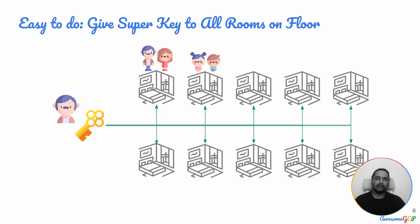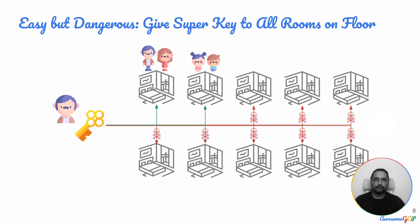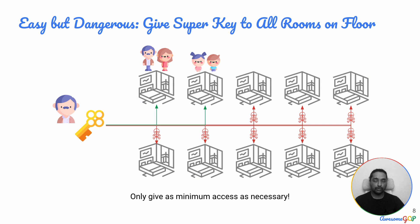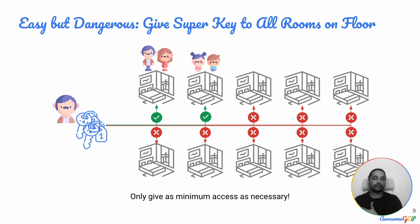Is this a reasonable thing to do? Obviously not. It would be dangerous to give universal access to the entire floor to one person because they could misuse it — maliciously or otherwise, even accidentally walk into a room they should not be in. So giving broad permissions and privileges is usually not something you should do. The only access you should give should be as minimum as necessary. If they need access to two rooms, give them two keys. You should not be giving them access to all the other rooms.